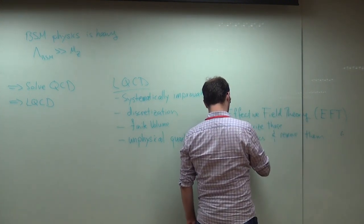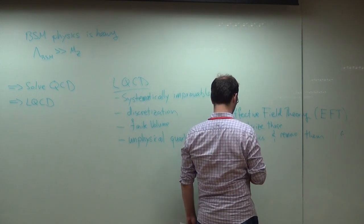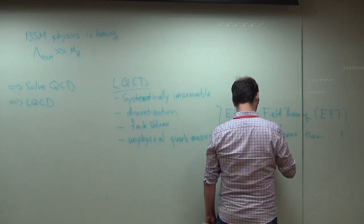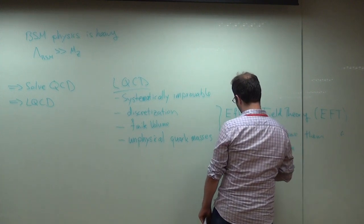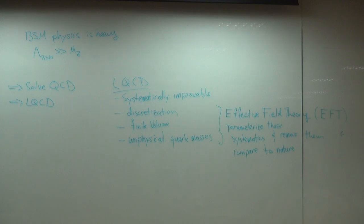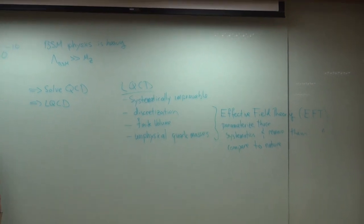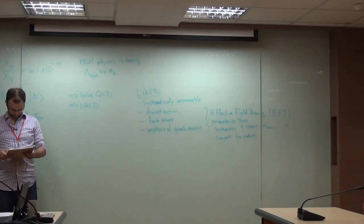What this means is there's absolutely nothing left out of the calculation — no approximations you've made that you cannot control. This is the only infrared, non-perturbative regularization method for QCD that can do that. That's the most important point.